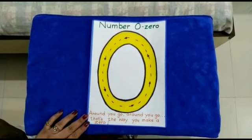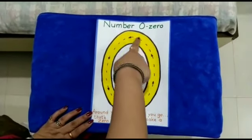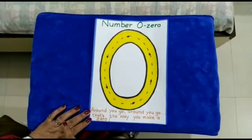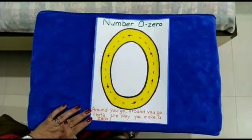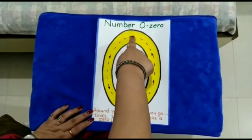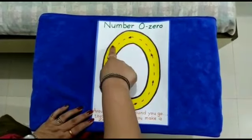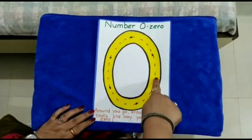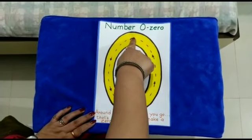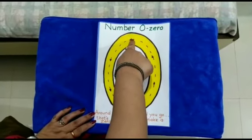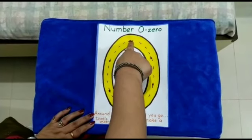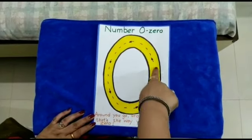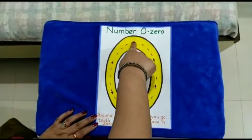Kids, now we will trace number 0 using our finger and we will also sing a song of number 0 which I taught you yesterday. We will start from this point, make a forward curve, come down, and then make a reverse curve. So now let us trace with our finger and sing the number 0 song. Round we go, round we go, that's the way we make a 0.